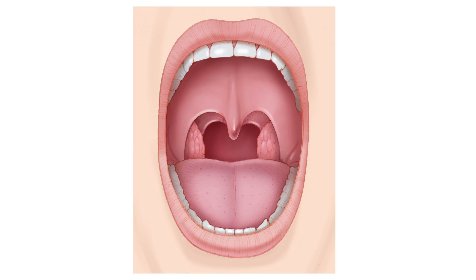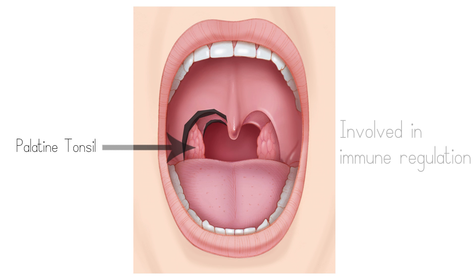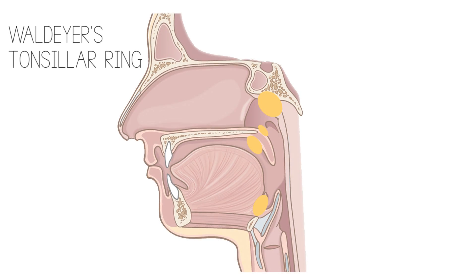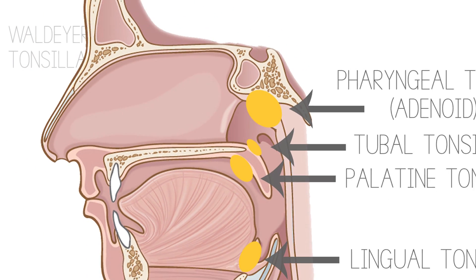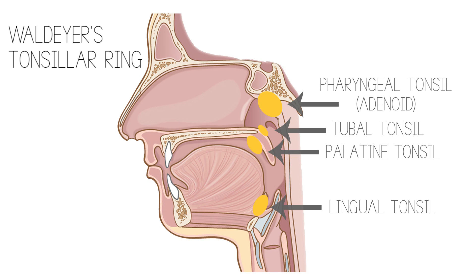This is a view of the pharynx as seen through the mouth. You can see the tongue, the pharyngoglossal and palatoglossal folds, between which lie the palatine tonsils. The palatine tonsils are a collection of lymphatic material involved in immune regulation of the aerodigestive tract. They are also part of Waldeyer's ring, which includes the tubal tonsils, the lingual tonsils at the base of the tongue, and the pharyngeal tonsils at the back of the nasopharynx. These are commonly referred to as adenoids.